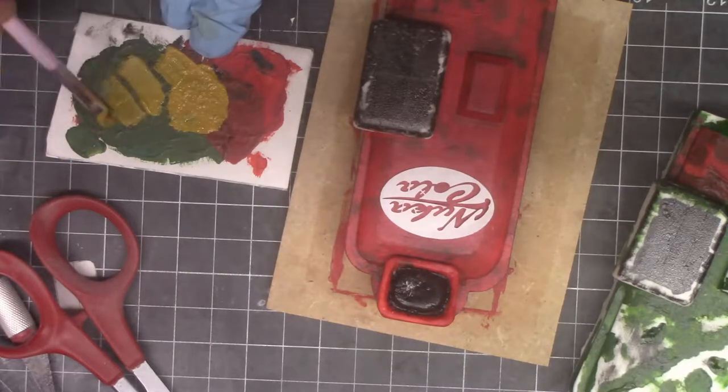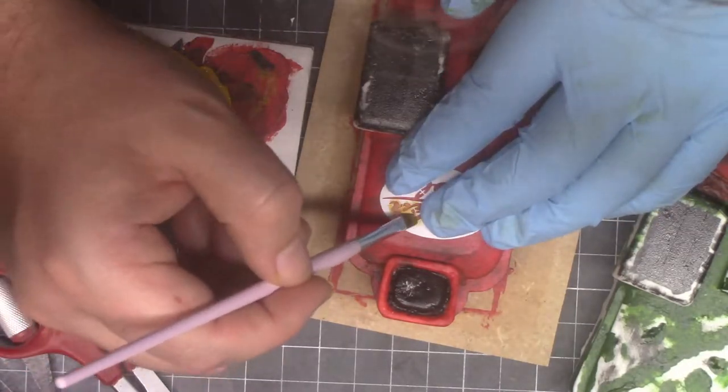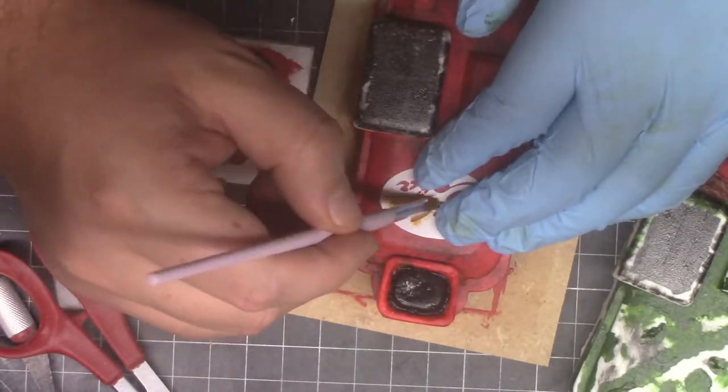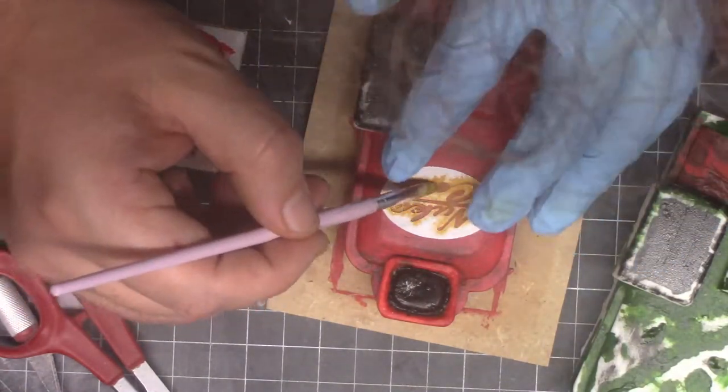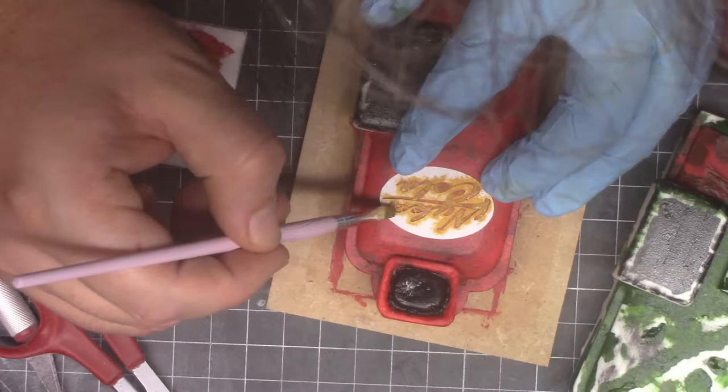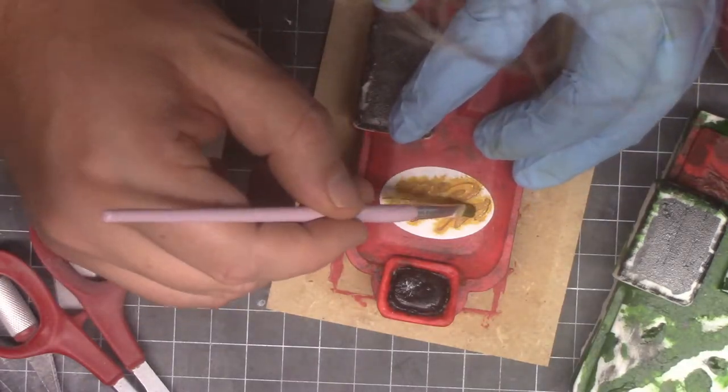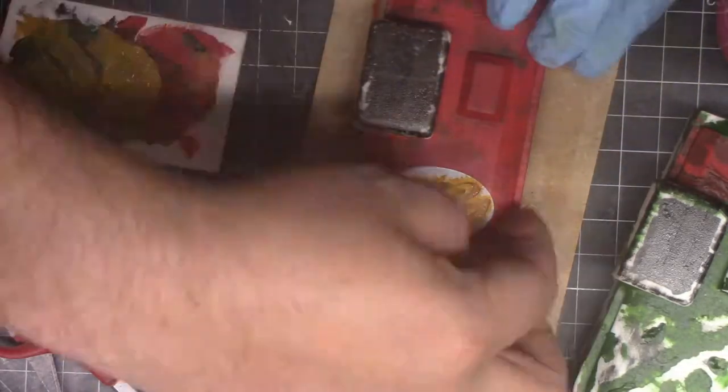All I did was dab the paint into the stencil carefully and went over it a few times and it came out looking pretty good. Because it was a stencil, I had to go in and fill in some areas, but overall I'm pretty happy with how that part came out.